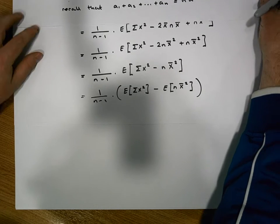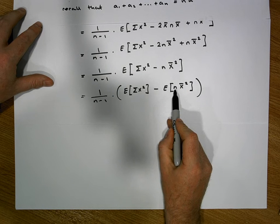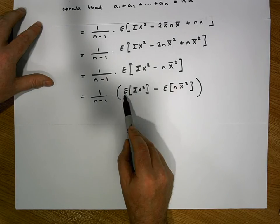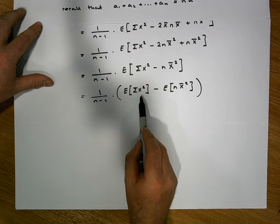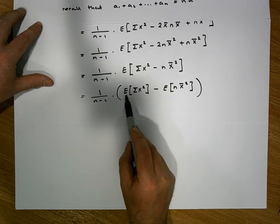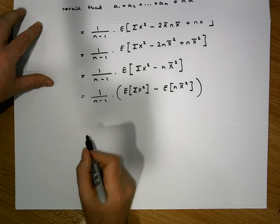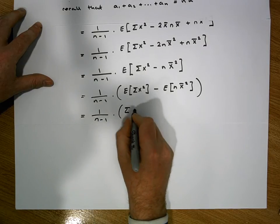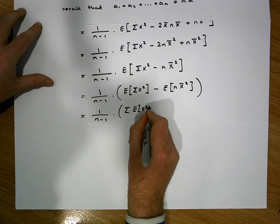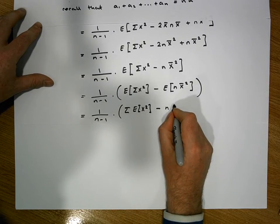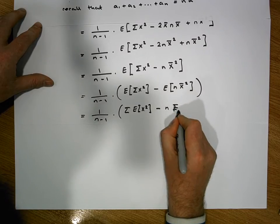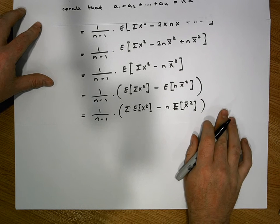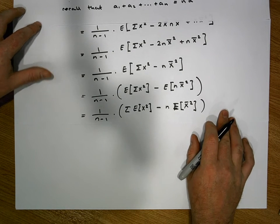We bring the constant outside of the expectation. Don't forget this is an expectation of a summation of x squared terms, which is the same as the sum of the expectations. So this becomes 1 over n minus 1 times the sum of the expectation of x squared, minus n times the expectation of x-bar squared.